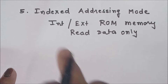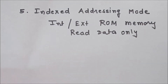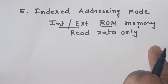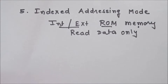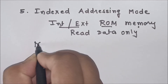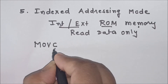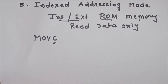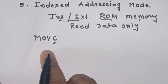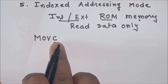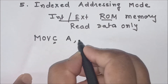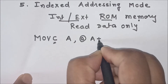The fifth addressing mode is index addressing mode, which is used for internal and external ROM memory. ROM is read-only memory, so we can only read data from it. Only one mnemonic is used: the MOVC instruction. Here, 'C' indicates code memory. For external RAM, 'X' is used; for internal and external ROM, 'C' is used. The only format is: read data from ROM memory — MOVC A, @A+DPTR.